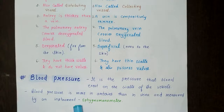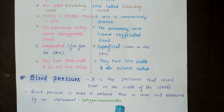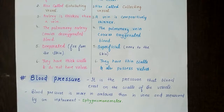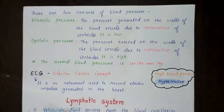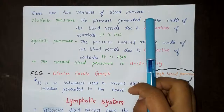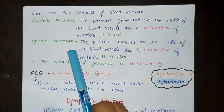Blood pressure is measured by an instrument called a sphygmomanometer, which you may have seen doctors use. There are two variants of blood pressure: diastolic pressure and systolic pressure.